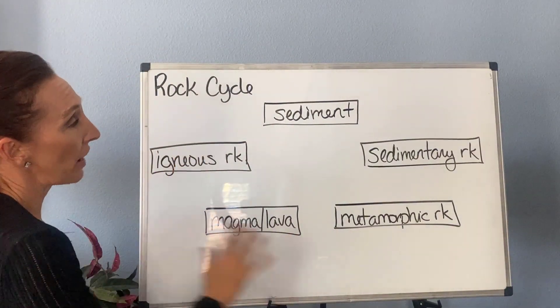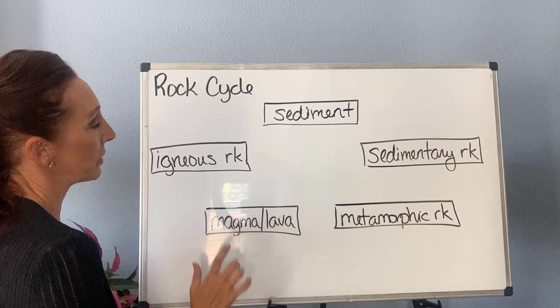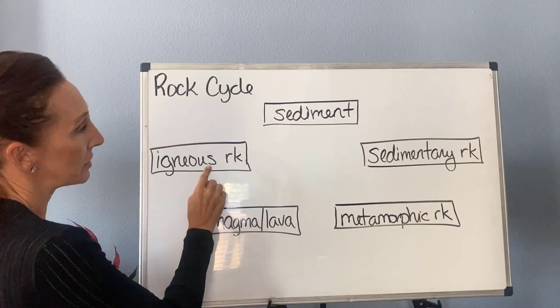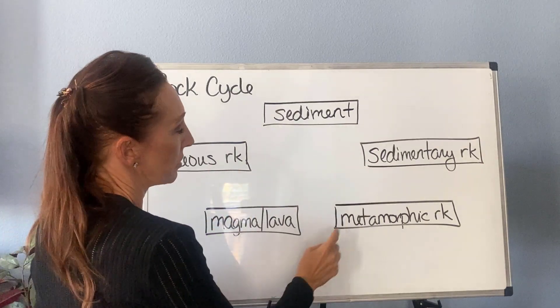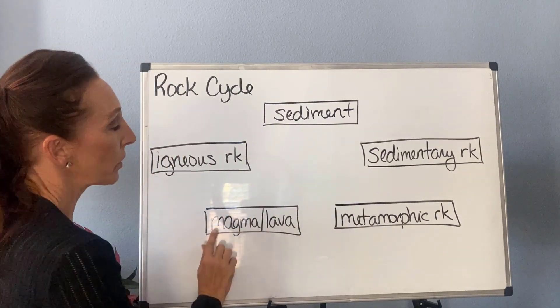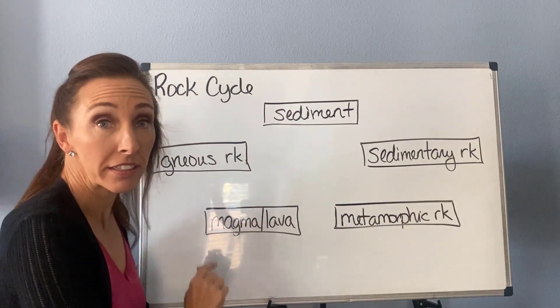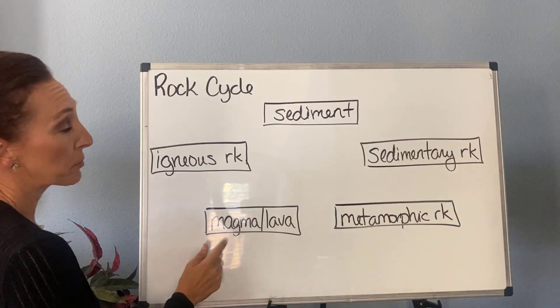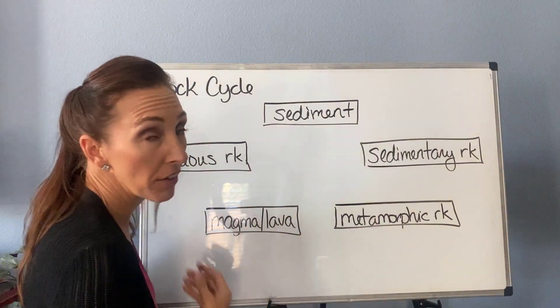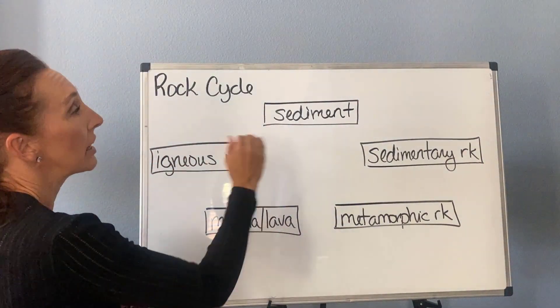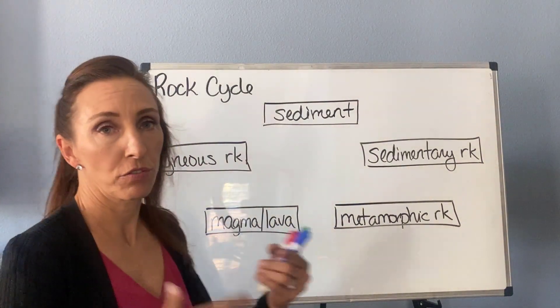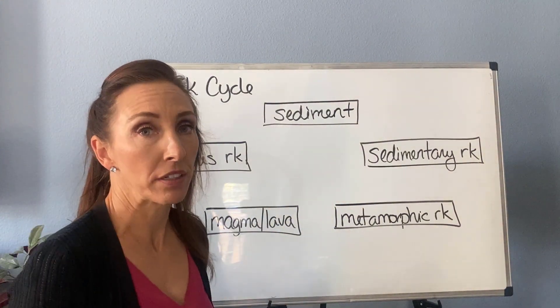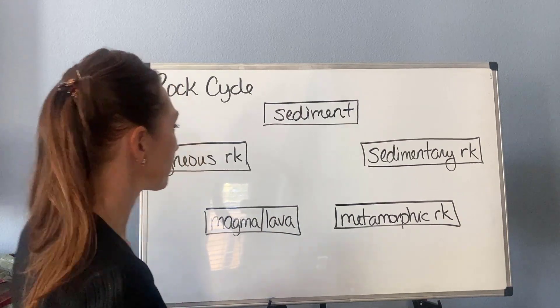There are five elements: three rock types — igneous, sedimentary, and metamorphic — melted material which is magma or lava (magma is below the surface, lava is on the surface), and then sediment, which is just broken down materials.